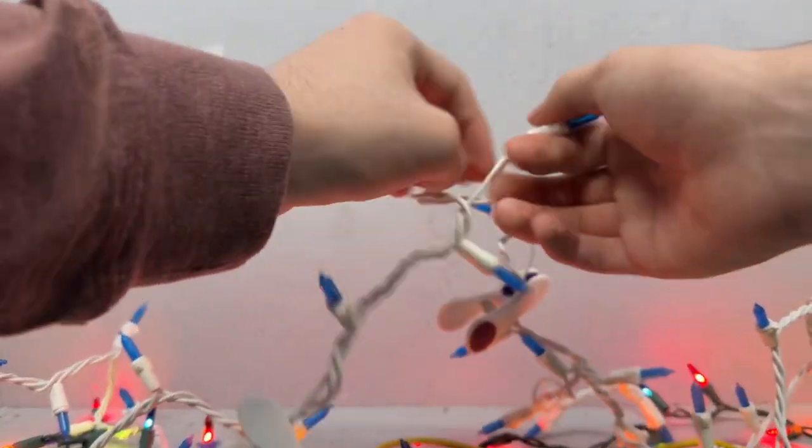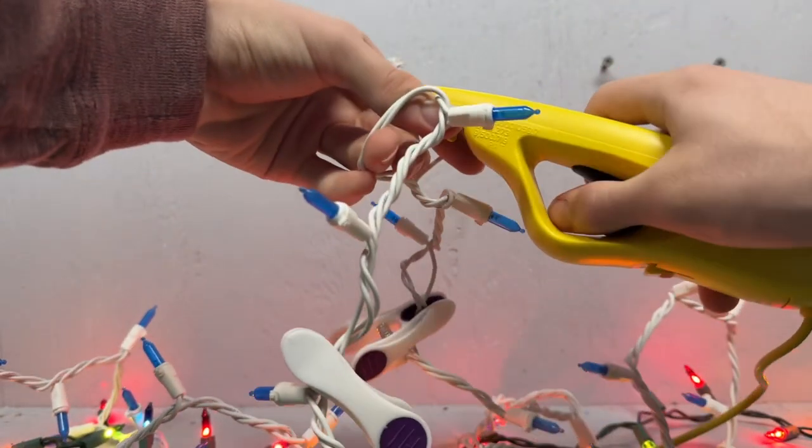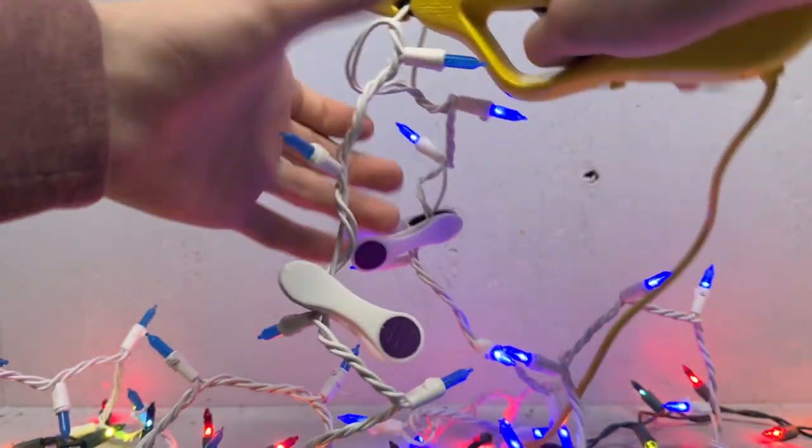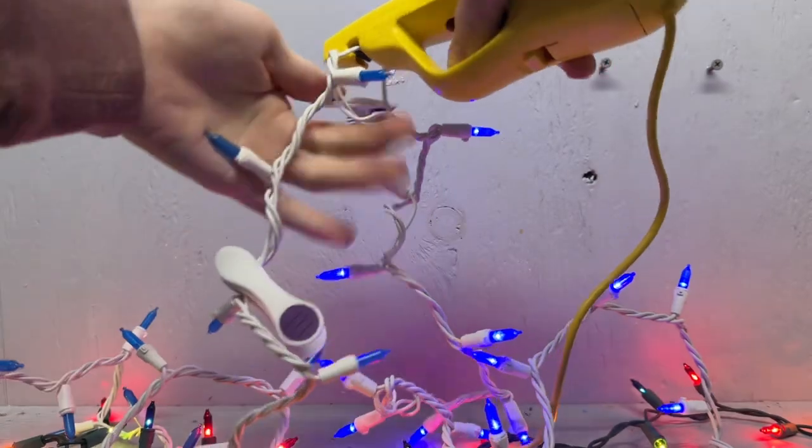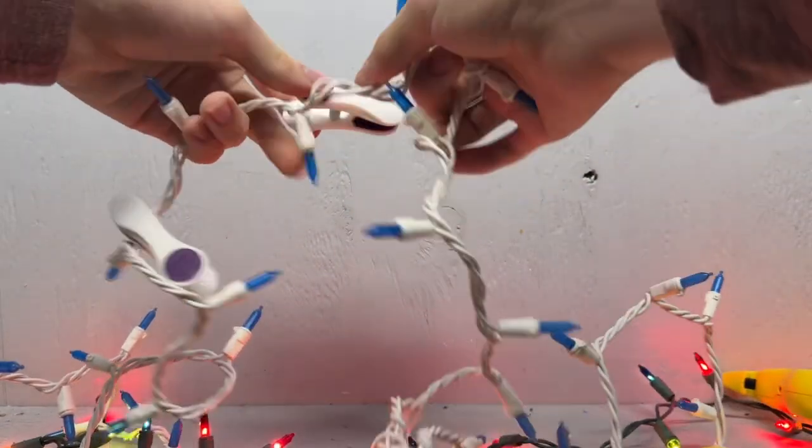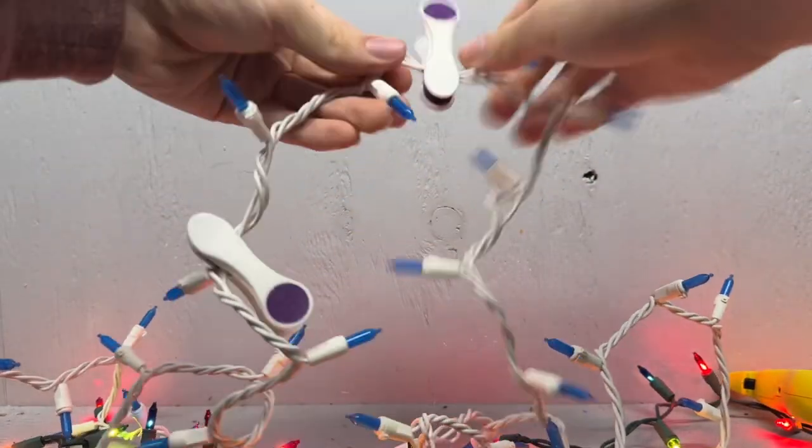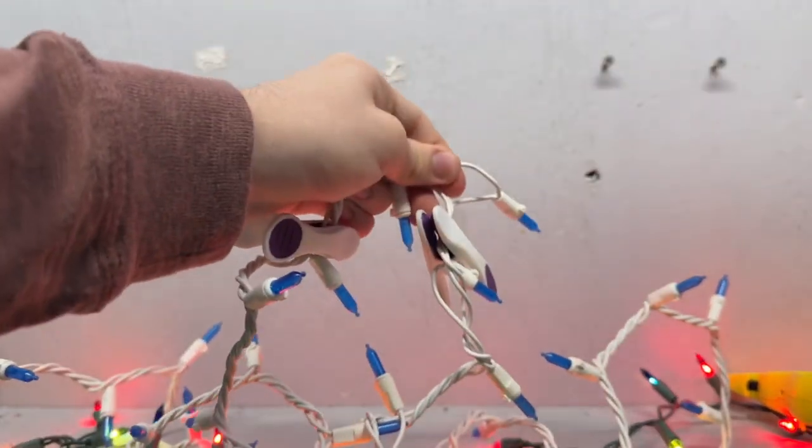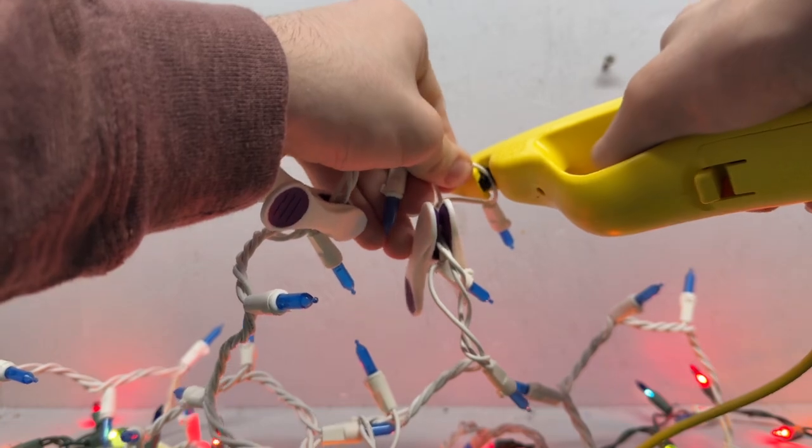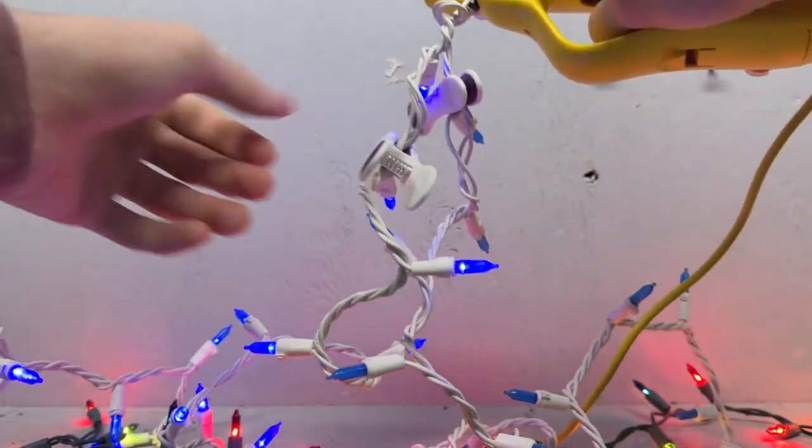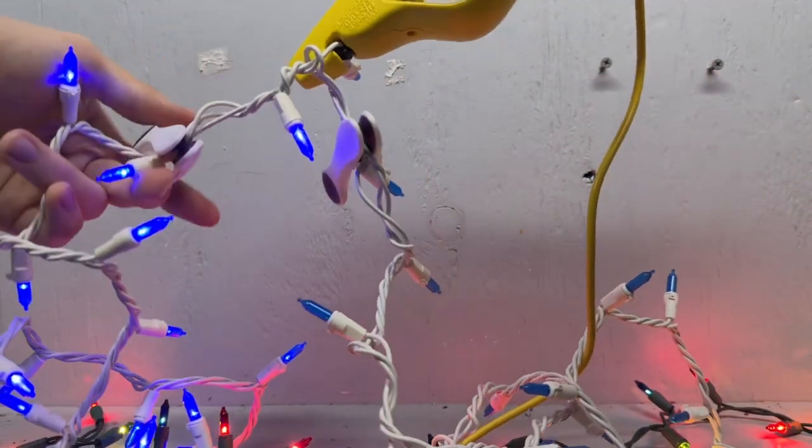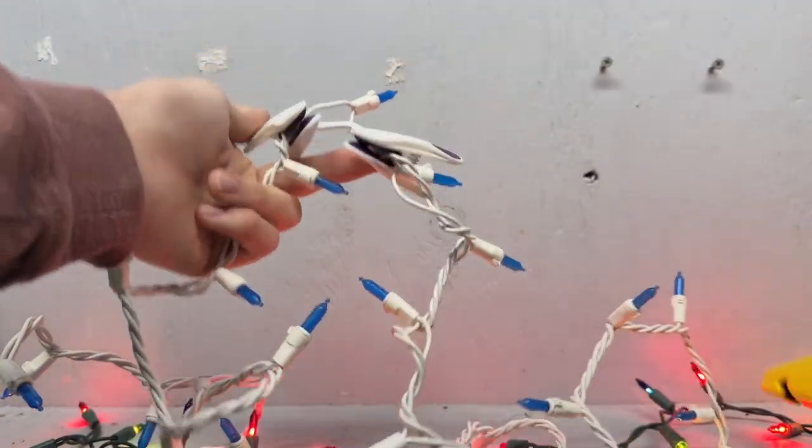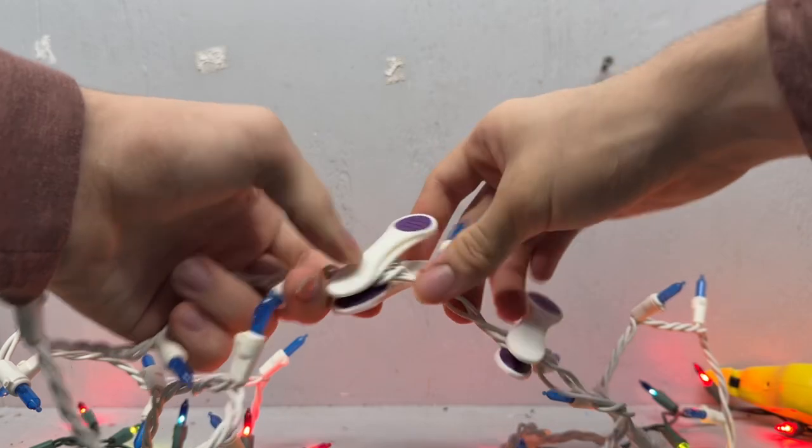And we just kind of keep doing this over and over again until we find the bad bulb. So those lights work. I'll move it to here. We have two lights left. You just kind of put it between them. Okay. That one works. So now we've narrowed it down to this bulb.